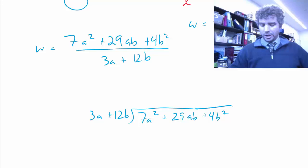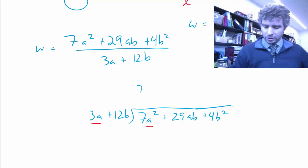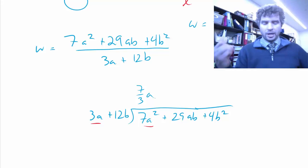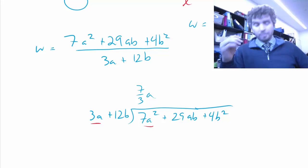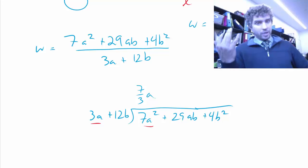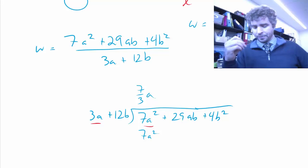So, the first step is to divide our 7a squared by 3a. So, 7 divided by 3 doesn't go in evenly, so we're just going to do 7 thirds, and a squared divided by a is just a. Now, I'm going to take that 7 thirds a and multiply it by the 3a plus 12b. So, 7 thirds a times 3a is, of course, 7a squared, which it better be, that's how we got it.